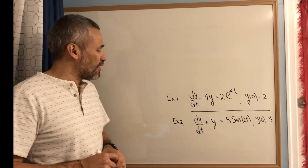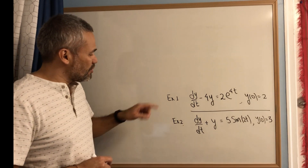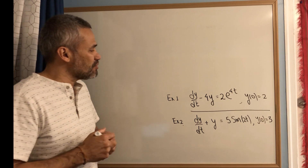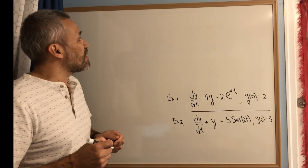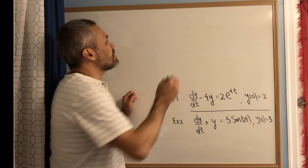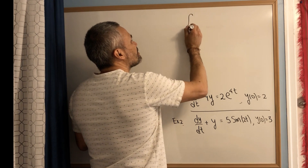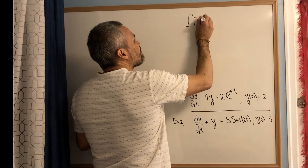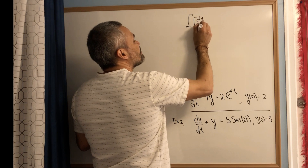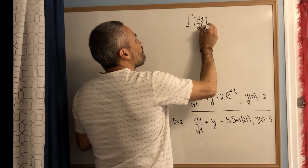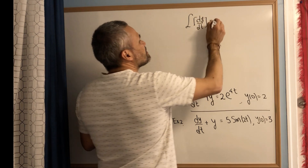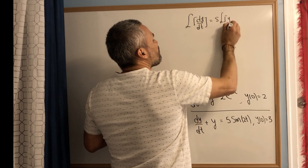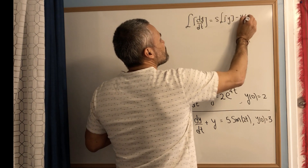In this video we will do two examples, example 1 and example 2. Let me remind you some of the formulas we will be using. This one — what I call the most important formula for the Laplace transform — says that the Laplace transform of dy/dt is equal to s times the Laplace transform of y minus y of 0.